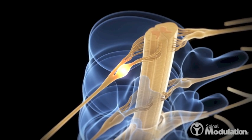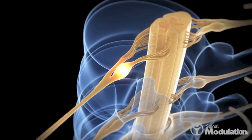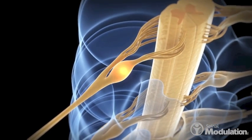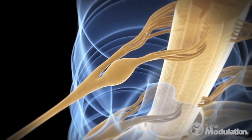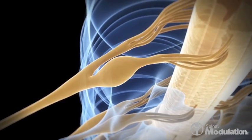The dorsal root ganglion, or DRG, is a sensory neural structure in the epidural space that plays a critical role in the development and maintenance of chronic pain.